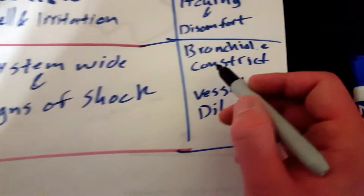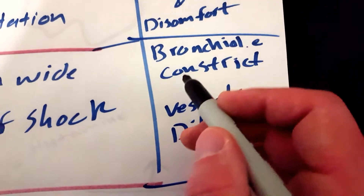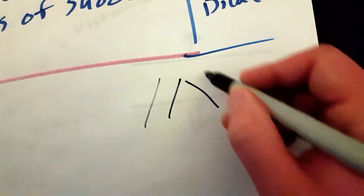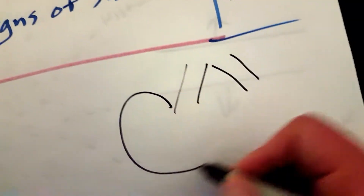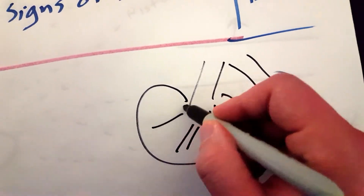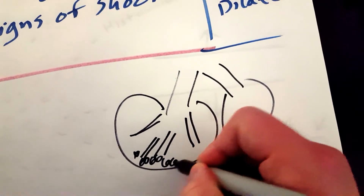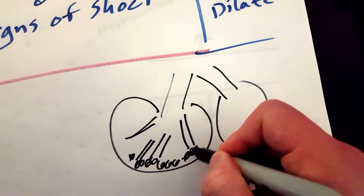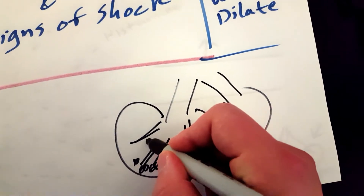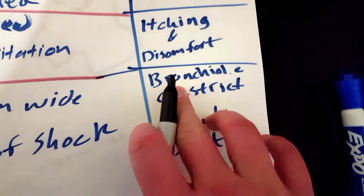In a severe allergic reaction, your bronchioles may constrict. Your bronchioles are the little tubes inside your lungs that carry oxygen to the alveoli for gas exchange, so that O2 can be carried to the rest of your body. That's why when these shut down, it's a big deal — you don't want that to happen.